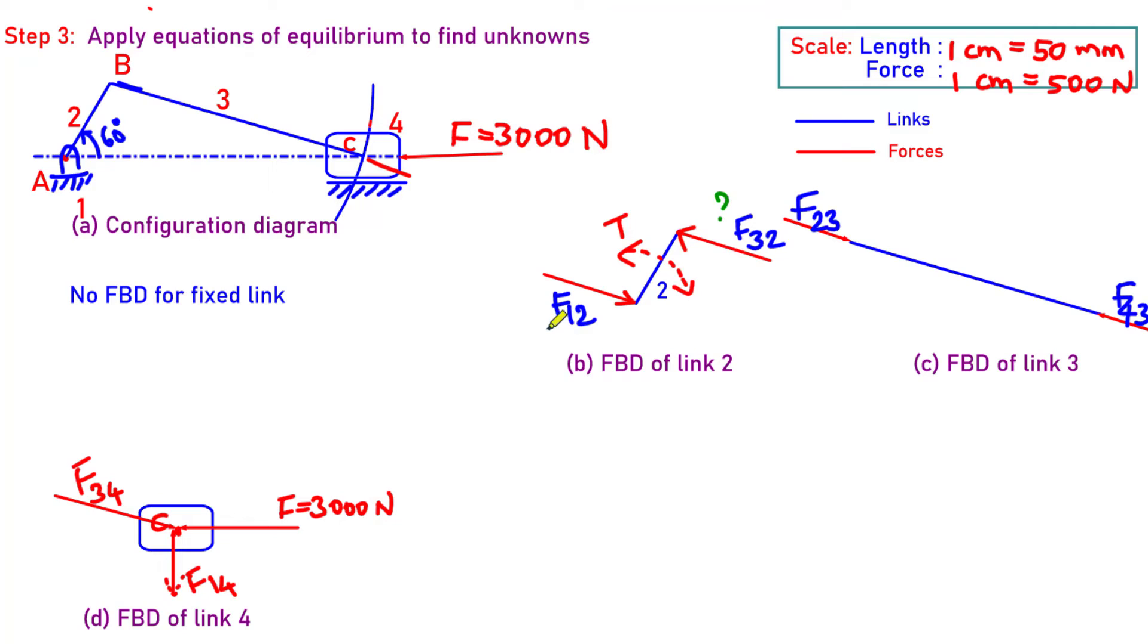Can we start from link 2? Do we know F32 magnitude? No. F12 magnitude? No. I know that it is equal to F32 and F12 also I don't know. Do we know T? No. We have three unknowns. We cannot try to find the answer now. Move on to next one.